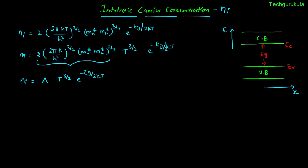We can see that Ni depends on temperature in two places: through T^(3/2) and through the exponential term. Furthermore, the energy band gap EG also depends on temperature, because EG depends on interatomic distance, and interatomic distance depends on temperature. In general, when temperature increases, interatomic distance increases and energy band gap decreases. So Ni is a very strong function of temperature — particularly because one of the terms is exponential.